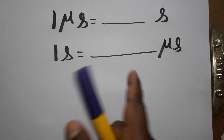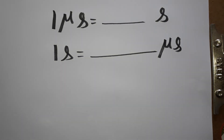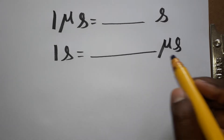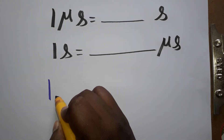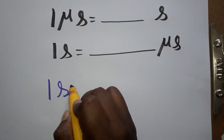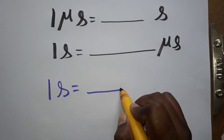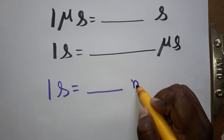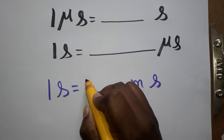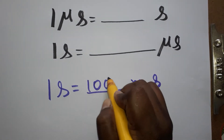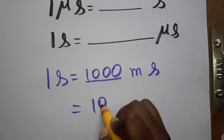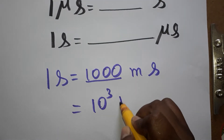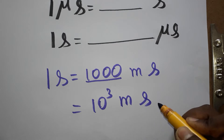Today we are going to learn: 1 microsecond is equal to how many seconds, and 1 second is equal to how many microseconds. First, we learn that 1 second is equal to 1000 milliseconds, which we can write as 10 power 3 milliseconds.